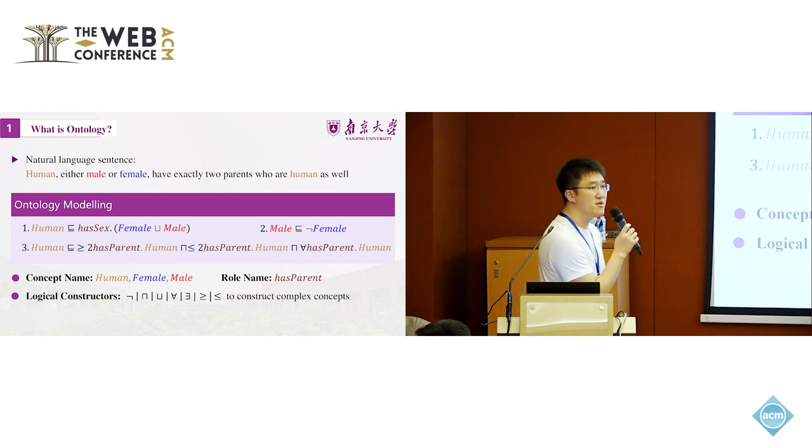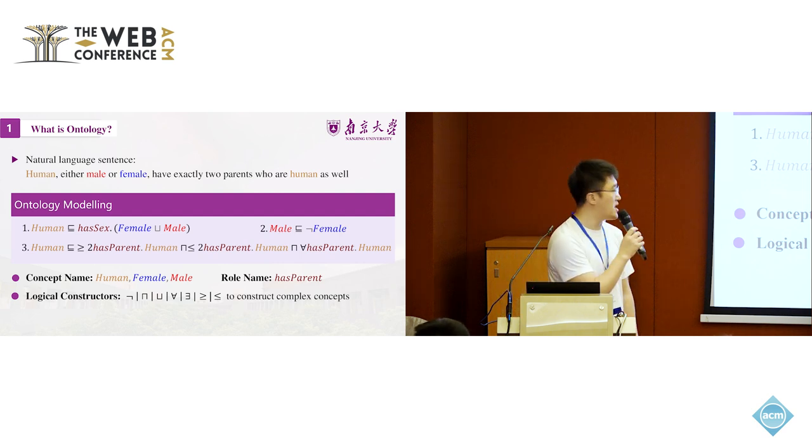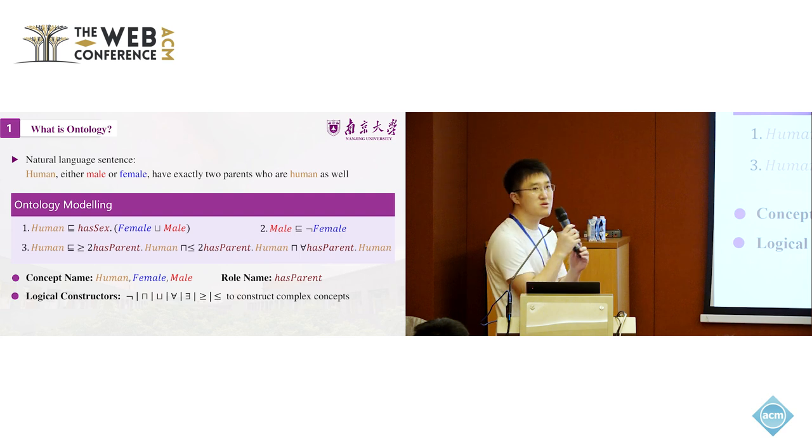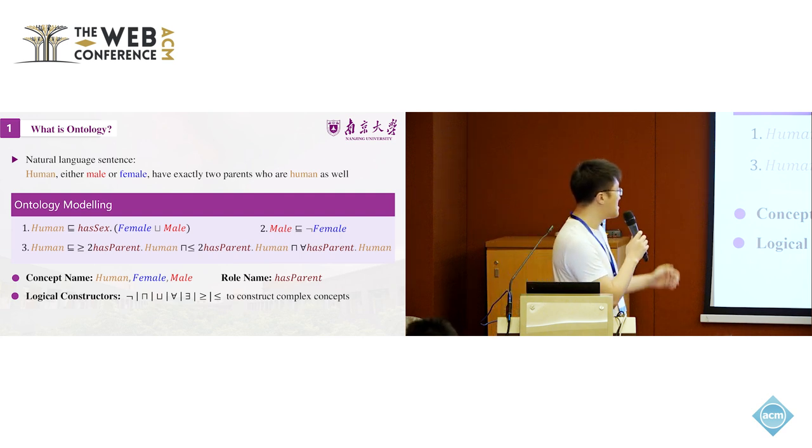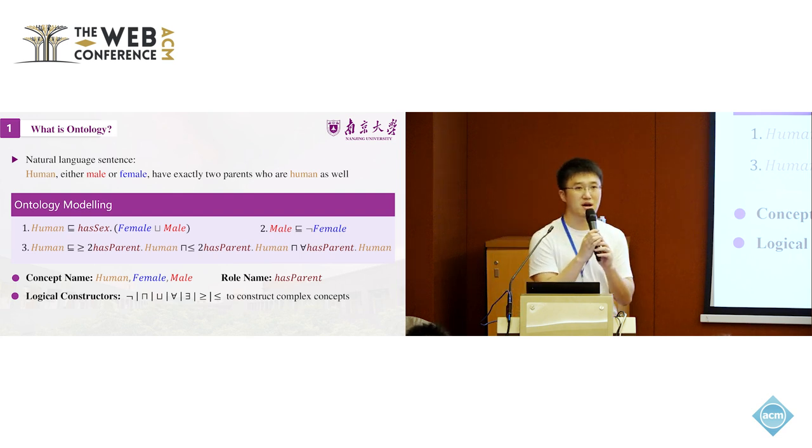Where human, female, male, and something like nouns are concept names, and the binary relation has-parent is a role name. We can also use logical constructors like negation, and, all, exist for all, something like this, to construct complex concepts.